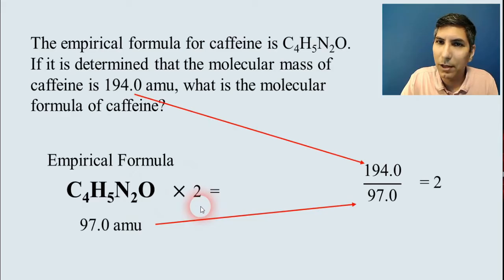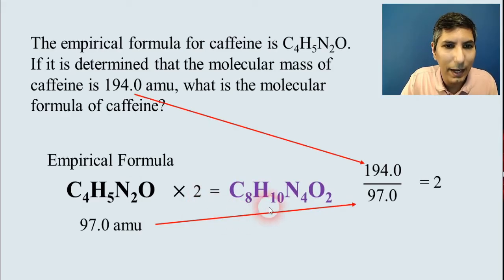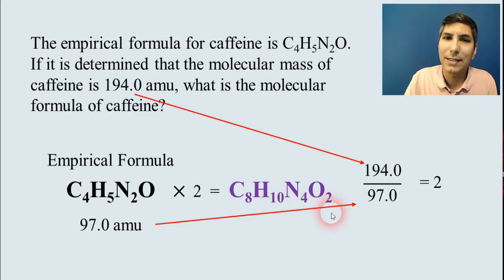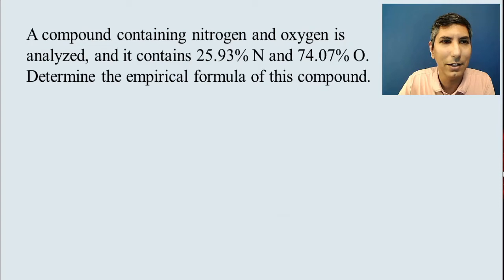So what that means is we have to multiply the empirical formula by 2. And when we do that, multiply all those subscripts by 2, we get the C8H10N4O2. That's the exact same molecular formula that we had way back at the beginning of this problem. So that's how you can go from the percent by mass data backwards to the empirical formula and even the molecular formula. So that's actually a very neat little calculation to do.